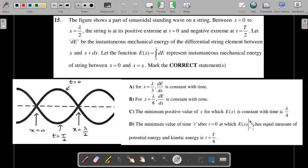Option D: the minimum value of t after t equals zero at which E of x at x equals lambda by two has equal measure of potential and kinetic energy, claiming that instant to be capital T by six.